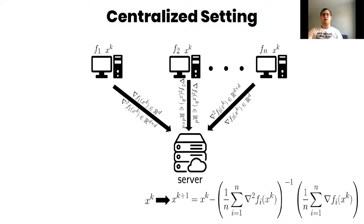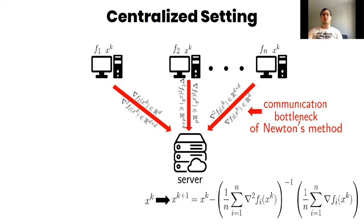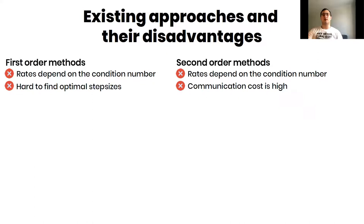However, in distributed optimization, communication is much more expensive than local computations. This is a communication bottleneck of Newton's method. There are several approaches in federated learning, but they have some disadvantages that you can see on the slide.